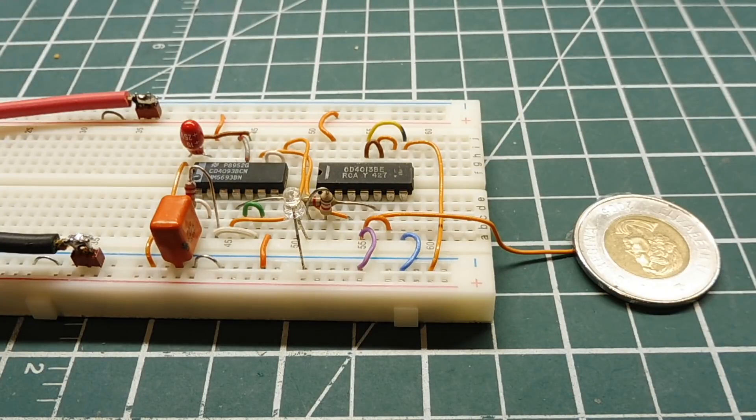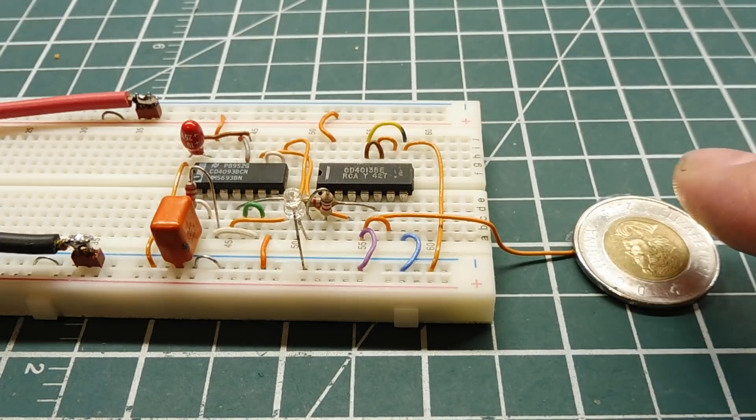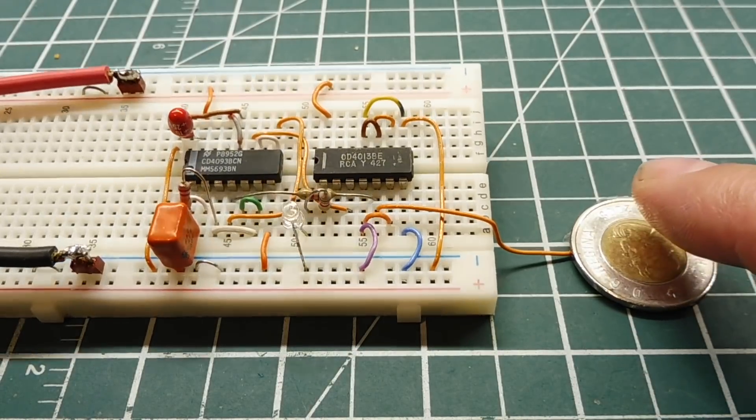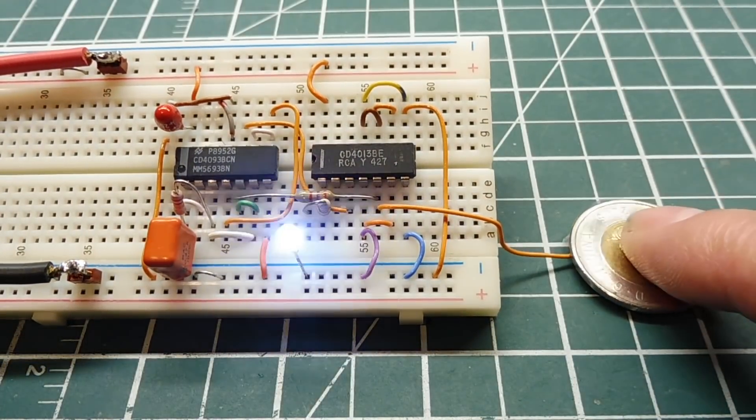In this video, we are going to look into building a capacitive touch switch. I've built it on my breadboard, and this is my capacitive touch sensor - I'm just using a coin. So when I touch the coin, you activate the LED on the breadboard.